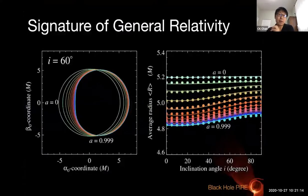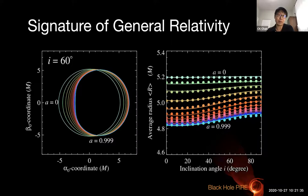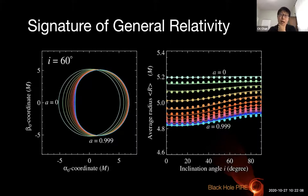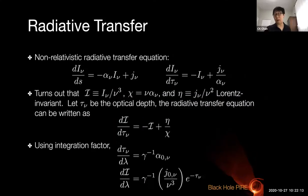General relativity has a very distinguished signature: the black hole shadow. No matter the spin of the black hole or the inclination, the shadow is nearly circular. This provides a null test of general relativity: if the EHT observes something unlike a circle, we can make a statement that GR is probably not right. More recently, a paper from the EHT collaboration led by Dimitrios Psaltis made this test more quantitative, using the size of the black hole shadow to place constraints on general relativity.